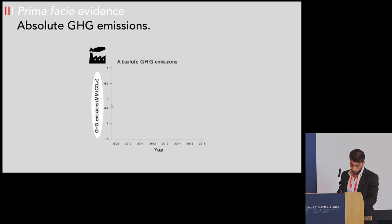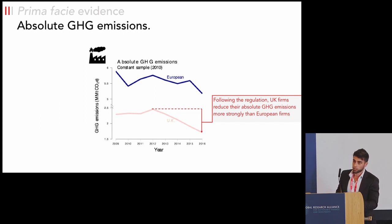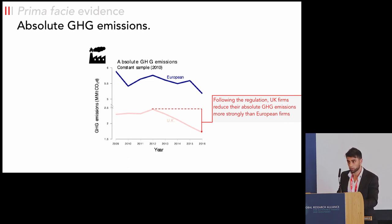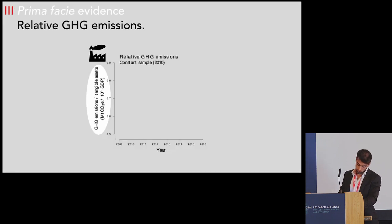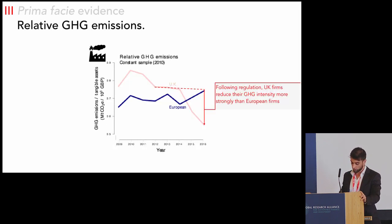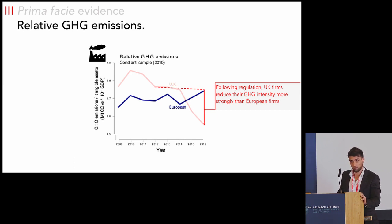What about emissions? Looking at absolute emissions — simply the level of emissions — we find a steady decrease from 2013. For comparisons, it's less clear. From a climate change perspective, absolute emissions are relevant, but from an economic or financial perspective, it may be more relevant to look at relative emissions. When we take the ratio of emissions over tangible assets, we find an even more dramatic decrease in emissions for UK firms. These three graphs show that a shock in comparability and standardization of information alone led to a decrease in emissions — which is good news.